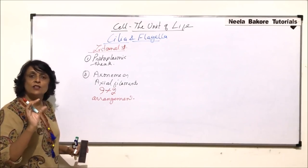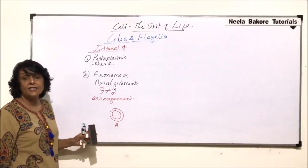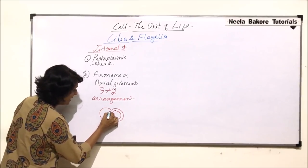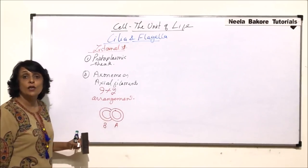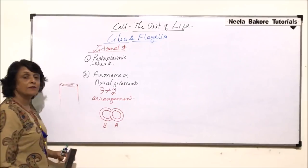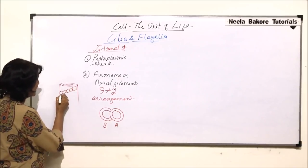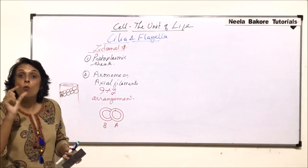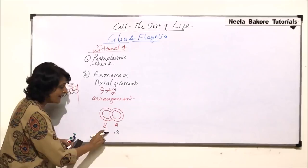The peripheral microtubules are made up of tubulin proteins and they are in the form of a doublet. A doublet means there are two tubules together: this is the A tubule and attached to it is the B tubule. A is slightly inner, B is slightly outer. The A tubule's wall is made up of protofilaments composed of alpha and beta tubulin proteins spirally arranged. A is made up of 13 protofilaments.